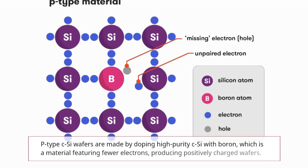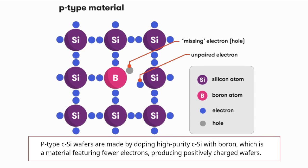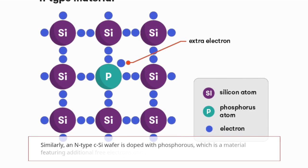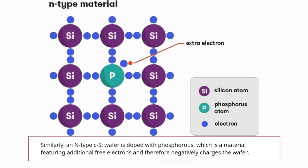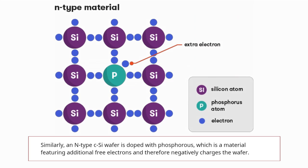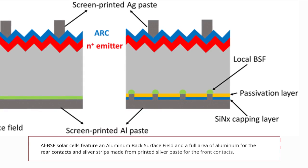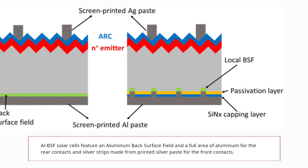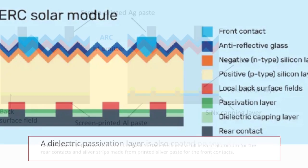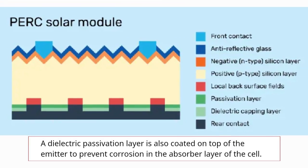P-type crystalline silicon wafers are made by doping high-purity silicon with boron, which is a material featuring fewer electrons, producing positively charged wafers. Similarly, an N-type crystalline silicon wafer is doped with phosphorus, which features additional free electrons and therefore negatively charges the wafer. These layers placed one on top of another create an internal electric field. Al-BSF solar cells feature an aluminum back surface field and a full area of aluminum for the rear contacts, and silver strips made from printed silver paste for the front contacts. A dielectric passivation layer is also coated on top of the emitter to prevent corrosion in the absorber layer of the cell.